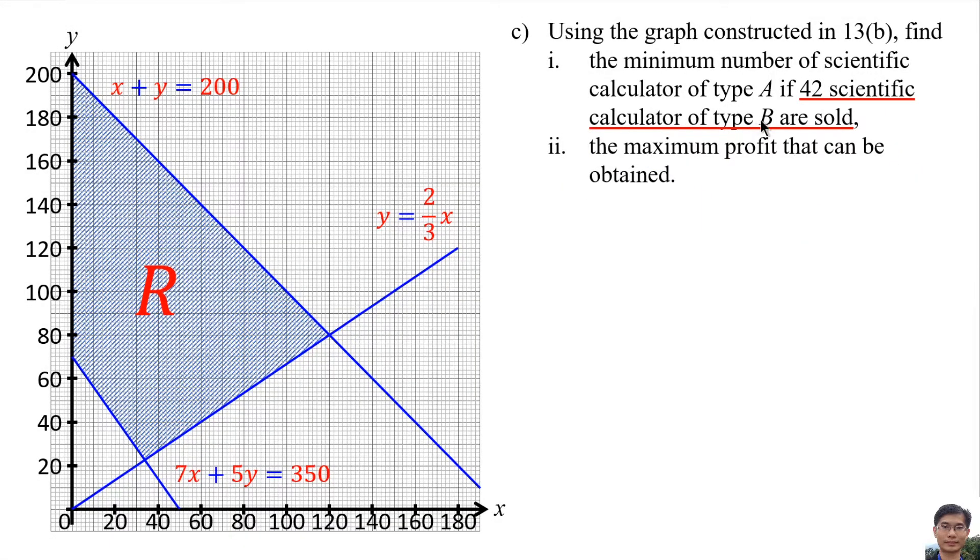Number of scientific calculator of Type B means y equals 42. So we draw the line y equals 42. This is the minimum of x and this is the maximum of x. Meaning to find the minimum number of scientific calculator of Type A means the minimum of x. So the minimum of x is 20. The minimum number of scientific calculator of Type A is 20.